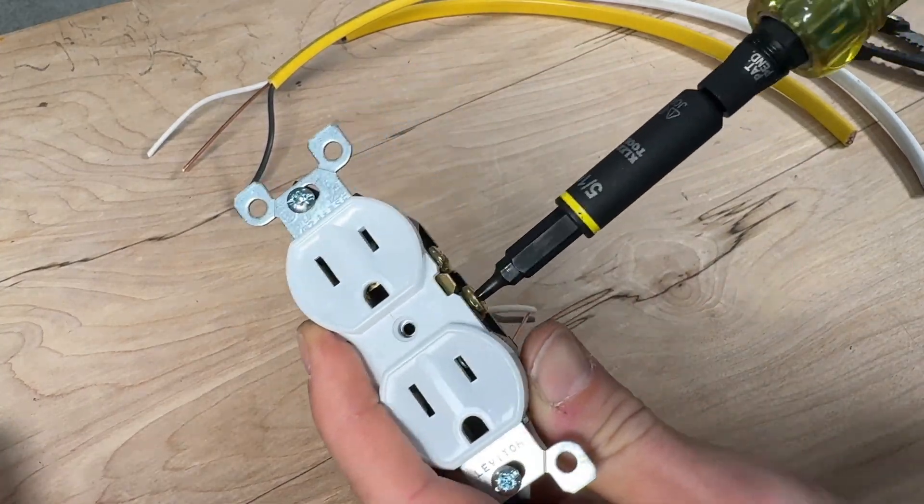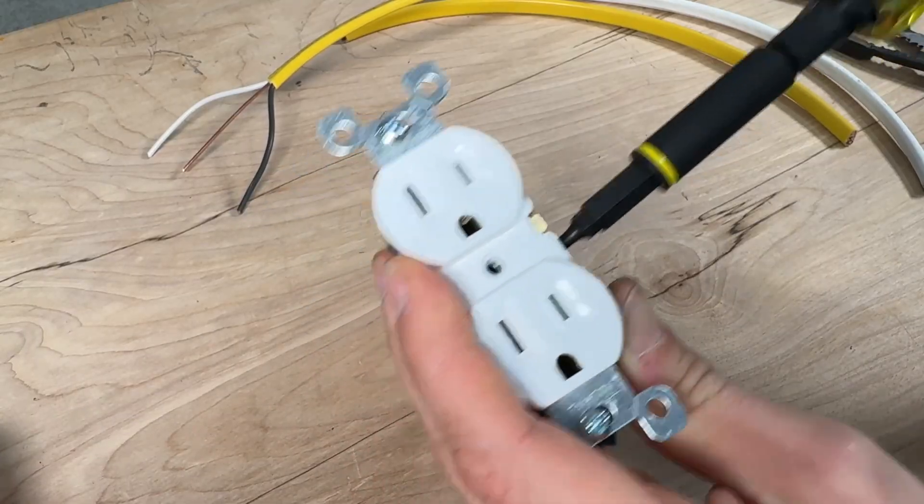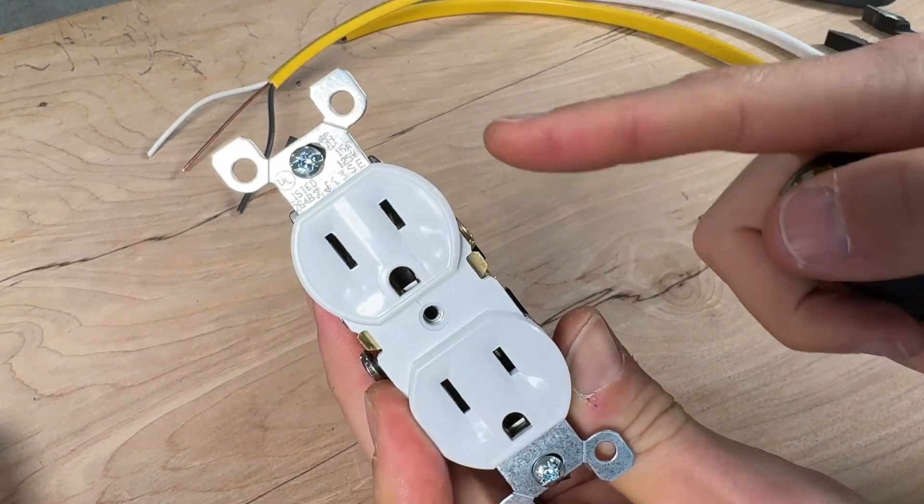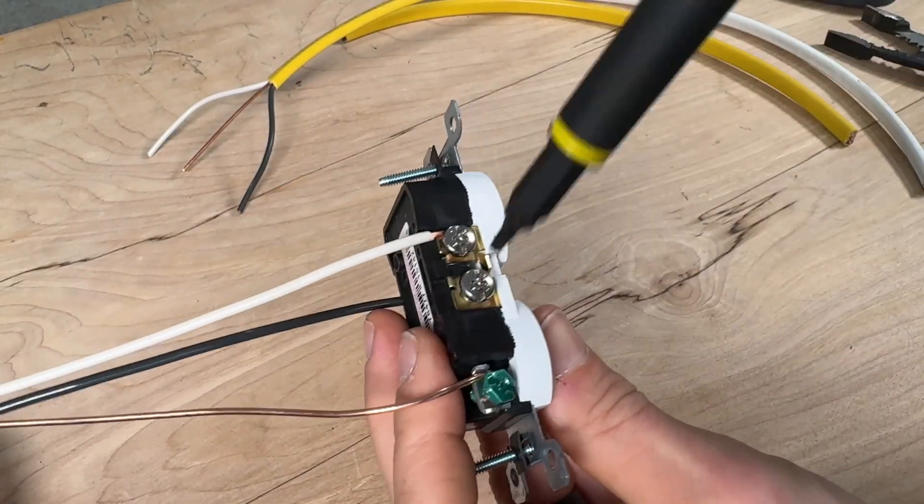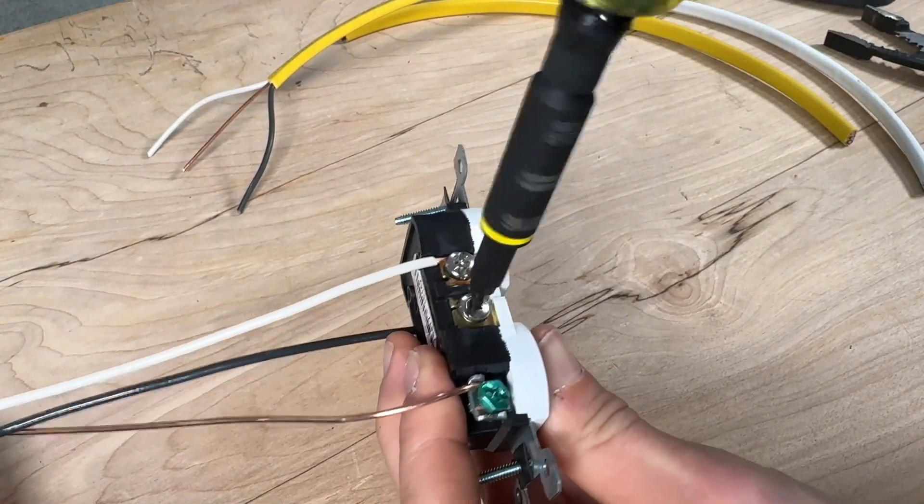Additionally, I would just go ahead and tighten down any of those unused screw terminals just as best practice, keeping everything as close to the housing as possible where it's not sticking out past the housing.